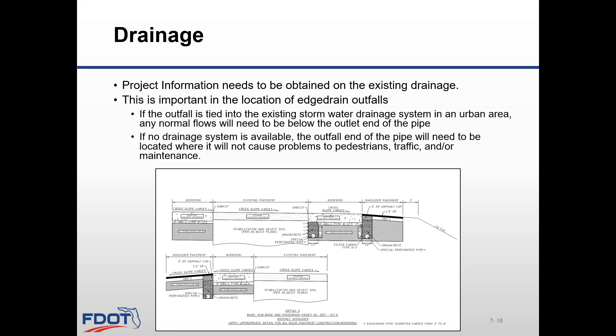Project information needs to be obtained on the existing drainage. This is important in the location of edge drain outfalls. If the outfall is tied into the existing stormwater drainage system in an urban area, any normal flows will need to be below the outlet end of the pipe. If no drainage system is available, the outfall end of the pipe will need to be located where it will not cause problems to pedestrian traffic and/or maintenance. Included is an example of widening next to the existing pavement and its drain details to support the pavement design.